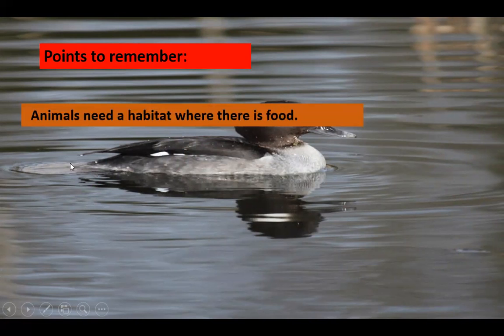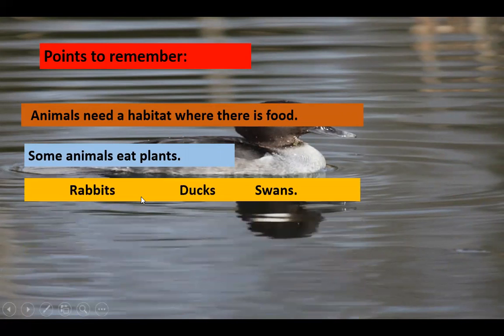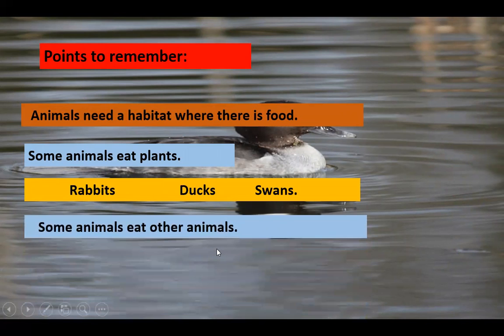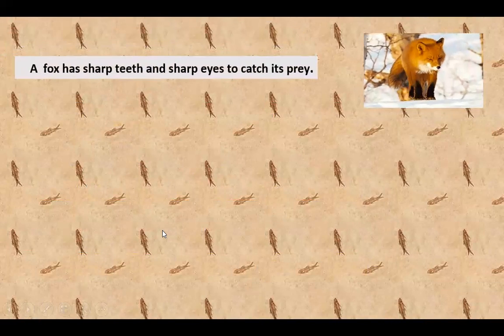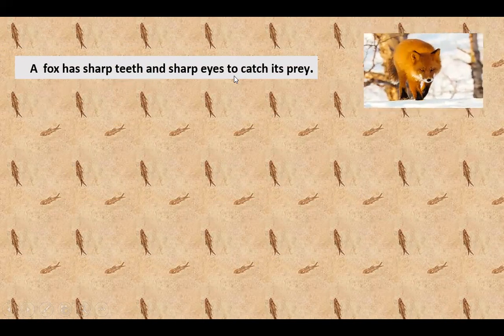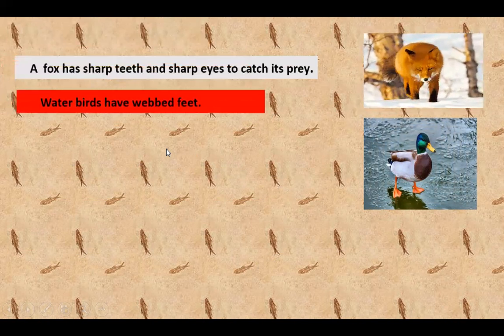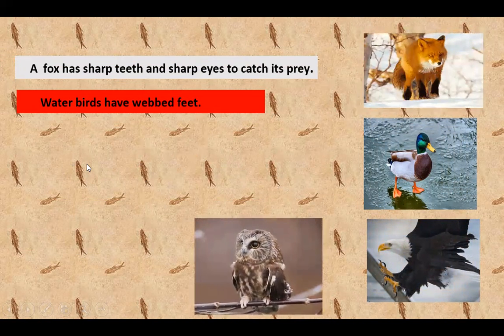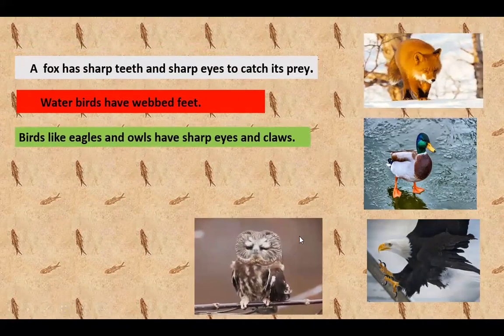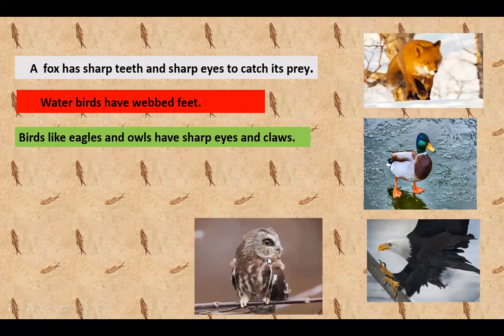Points to remember: animals need a habitat where there is food. Some animals eat plants, like rabbits, ducks, and swans. Some animals eat other animals, like fox, owl, and eagle. A fox has sharp teeth and sharp eyes to catch its prey. Water birds have webbed feet.